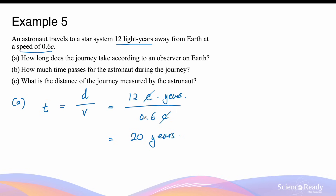Alternatively, you can convert 12 light years into meters by multiplying the speed of light by 365 days per year, 24 hours per day, and so on, then divide by the speed in meters per second. However, I find that method much more complicated compared to the cancellation method when distance is provided in light years.